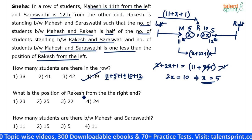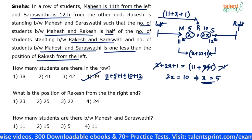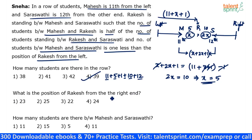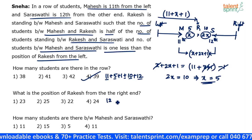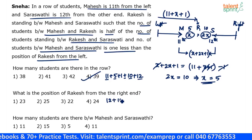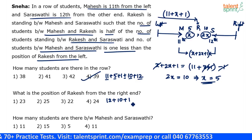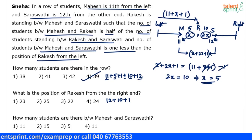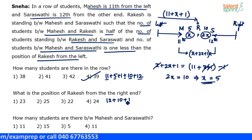What is the position of Rakesh from the right end? Up to Saraswati there are 12 persons, between Saraswati and Rakesh there are 10 persons, and Rakesh himself must be counted. So the position of Rakesh from the right end is 12 plus 10 plus 1, which equals 23.